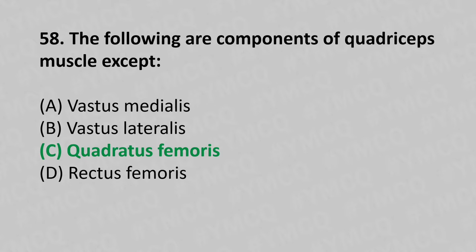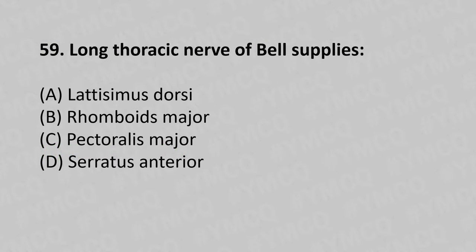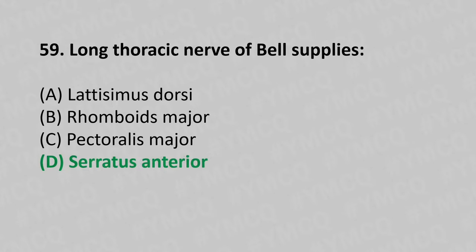Moving to our 59th question. Long thoracic nerve of Bell supplies: Option A, Latissimus dorsi; Option B, Rhomboids major; Option C, Pectoralis major; Option D, Serratus anterior. And the answer is Option D, Serratus anterior.